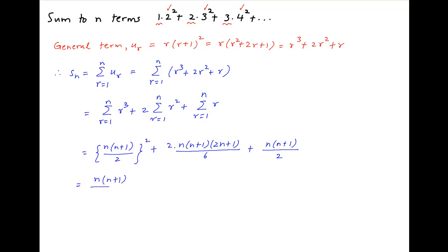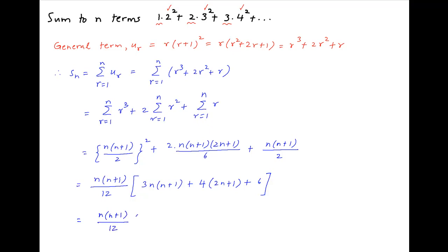Now take n(n+1)/12 common, multiplied by, in brackets, 3 times n(n+1) plus 4(2n+1) plus 6. This equals n(n+1)/12 multiplied by, in brackets, 3n² plus n plus n.